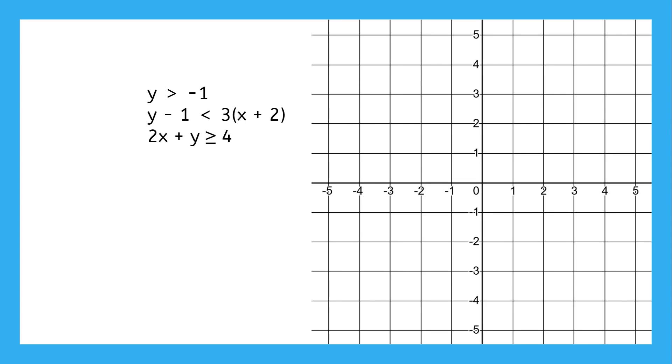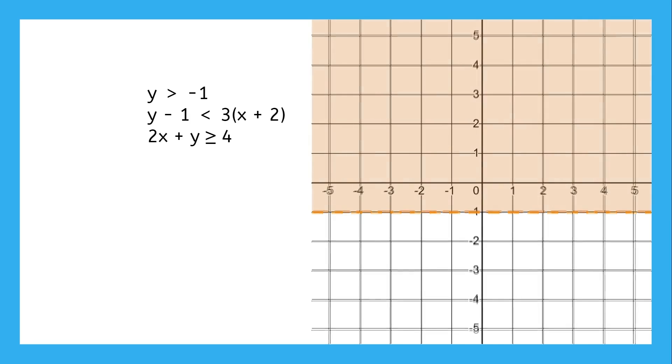The first inequality is easy. Here's y equals negative 1 as a dashed line because of the strict inequality, and since y is greater than negative 1, we shade above.